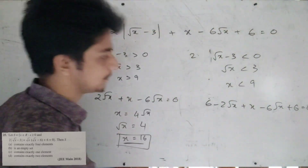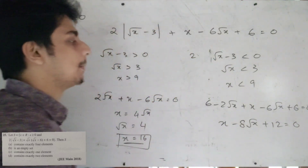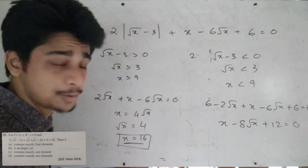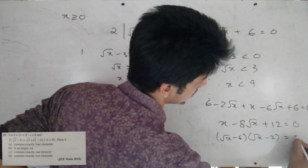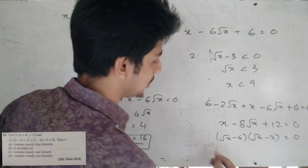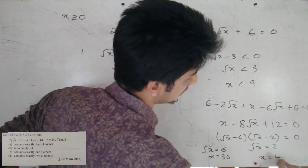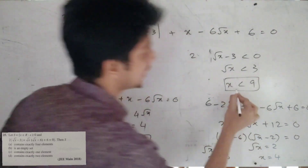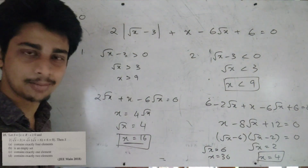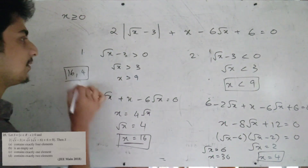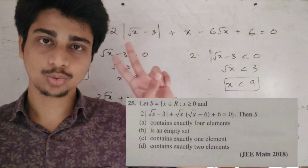With a sign change the equation becomes x − 8√x + 12 equal to 0, which factors as (√x − 6)(√x − 2) equal to 0. So √x = 6 gives x = 36, and √x = 2 gives x = 4. Our set contains exactly two elements: 16 and 4. The answer is option D.